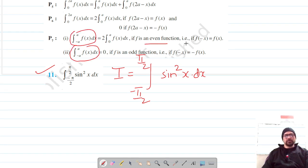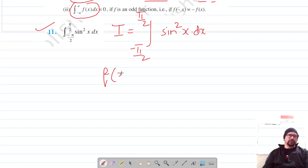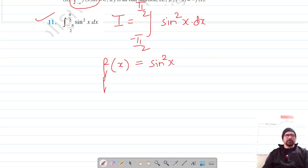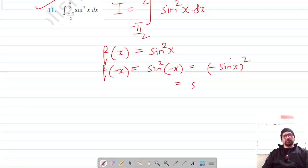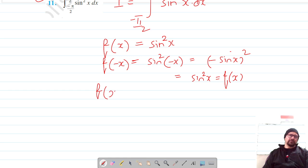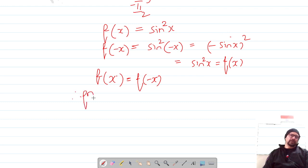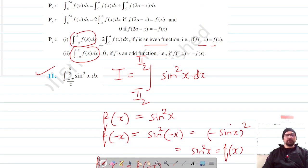We're going to check if our function is even or odd. Let f(x) = sin²x. Then f(-x) = sin²(-x) = (-sin x)² = sin²x = f(x). Since f(x) = f(-x), our function is even, which means we can write the integral in a simplified form.